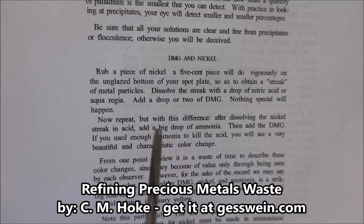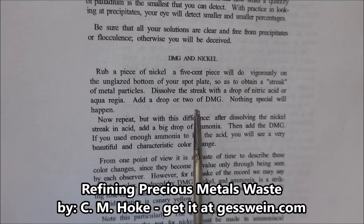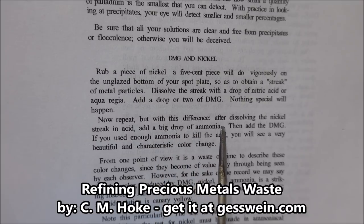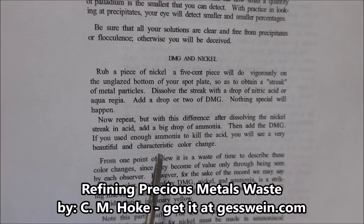Out of the same book, Testing for Nickel with DMG. It says dissolve some of the metal with a drop of nitric acid. We used hydrochloric instead. Add a drop or two of the DMG to that solution, nothing will happen. Now repeat, but with this difference. After dissolving the nickel, add a big drop of ammonia, then add the DMG. If you used enough ammonia to kill the acid, you will see a very beautiful and characteristic color change. It was a bright pink color.